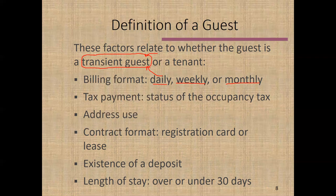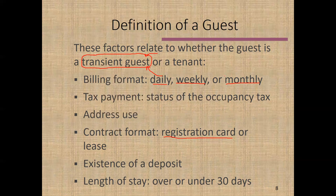What is the contract applicable to this transaction? A standard hotel registration card would point toward transient guest status. On the other hand, if you're using a lease, that person looks more like a tenant. When dealing with a long-staying person whose employer has negotiated a set fee, they may want a leasing arrangement or monthly billing. You'll want to balance the business relationship against the legal implications — it's not awful if they're a tenant, but there may be somewhat more liability and less ability to maneuver.